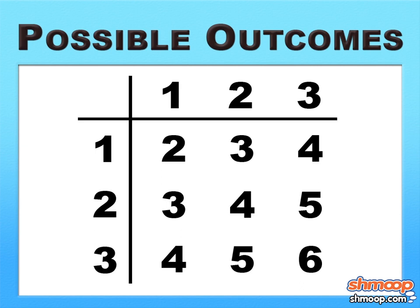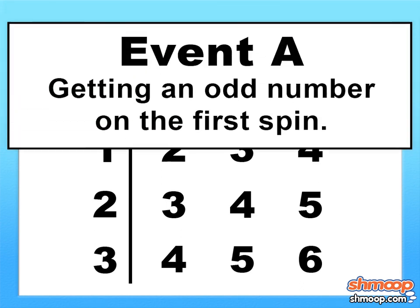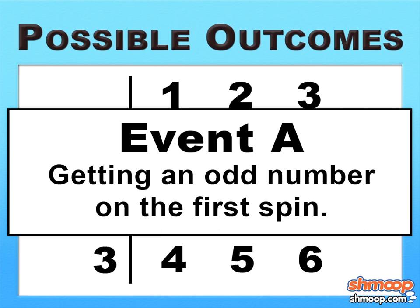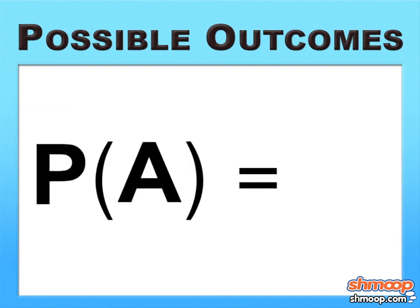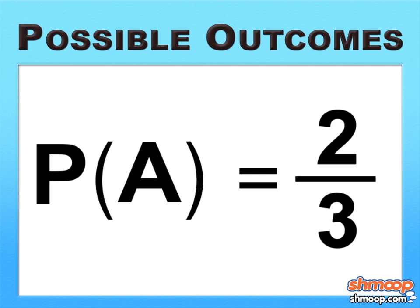Let's take a second and look back at those conditions you had to meet. Starting with event A: you have to spin an odd number on the first spin. Since both 1 and 3 are odd, the probability of getting an odd number on your first spin is good. The probability of A is 2 out of 3.